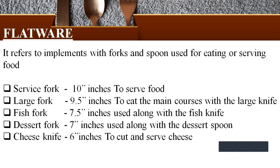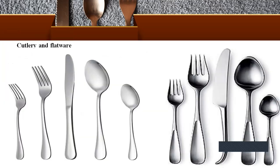Next, flatware refers to implements with forks and spoons used for eating or serving food. Service fork is 10 inches, used to serve food. Large fork, 9.5 inches, used to eat main courses with the large knife. Fish fork, 7.5 inches, used along with the fish knife. Desert fork, 7 inches, used along with the dessert spoon. Cheese knife, 6 inches, used to cut and serve cheese. Here you can see the picture of cutlery and flatware — cutlery is knives, and flatware is spoons and forks.